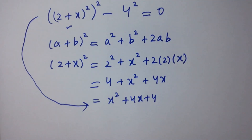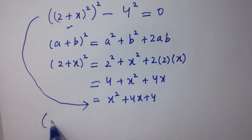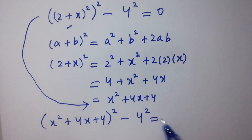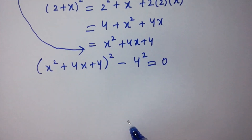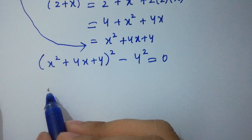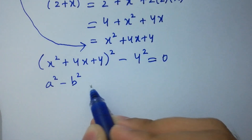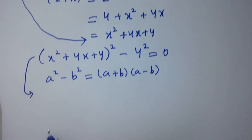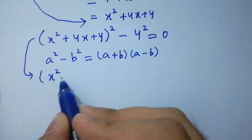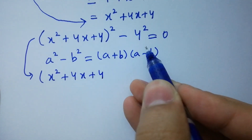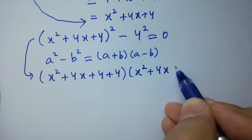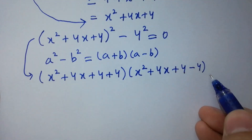I am going to put that into the equation. We have (x squared + 4x + 4) to the whole power 2 minus 4 squared equal to 0. In the next step, we know the formula a squared minus b squared equals (a + b)(a − b). Then it will be (x squared + 4x + 4 + 4) times (x squared + 4x + 4 − 4) equal to 0.